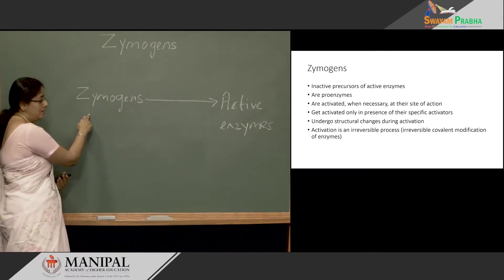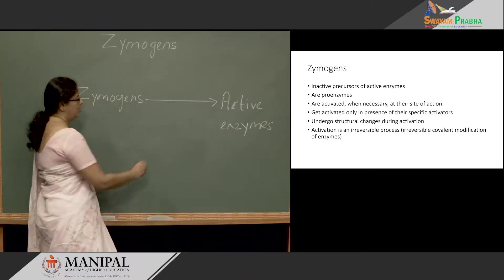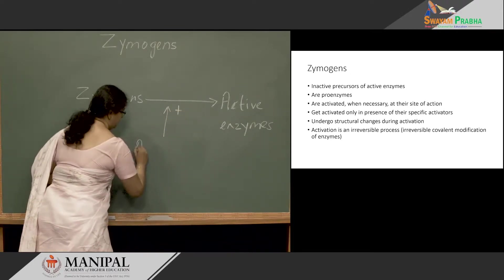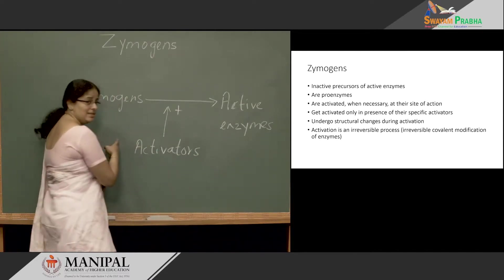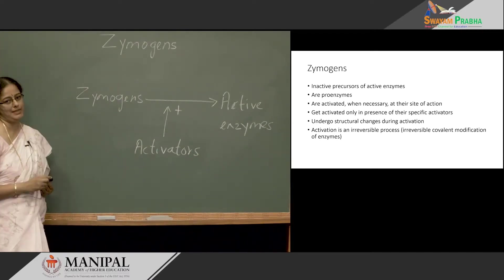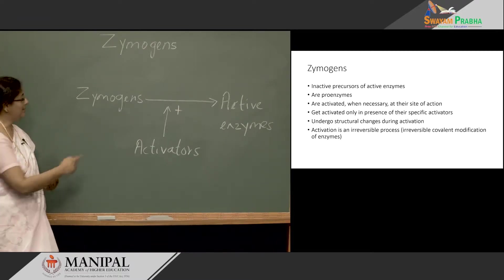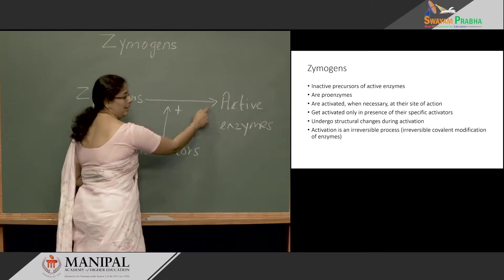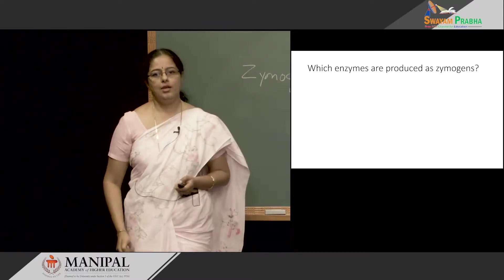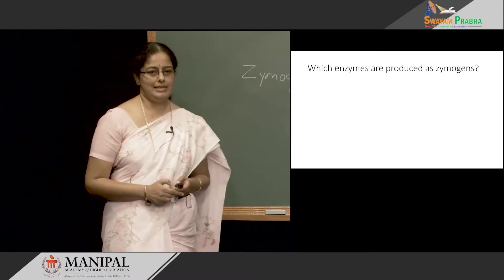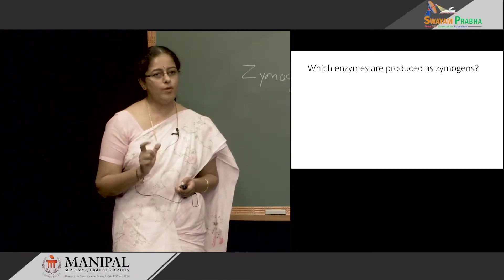Zymogens are inactive enzymes and they are converted to active enzymes at the site of action in the presence of activators. This activation happens only at specific sites and only when there is a requirement of active enzyme, and this activation process is irreversible. Next, let us see which enzymes are produced as zymogens. There are several thousands of enzymes in the body, but only few are produced as Zymogens.